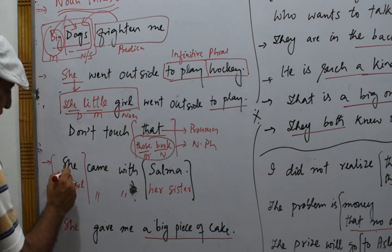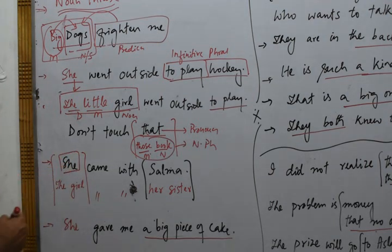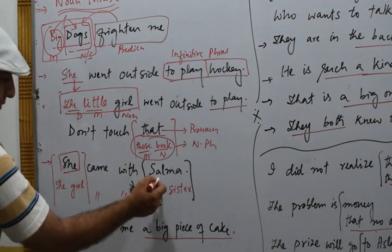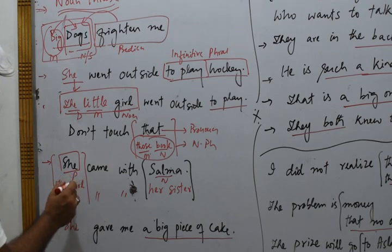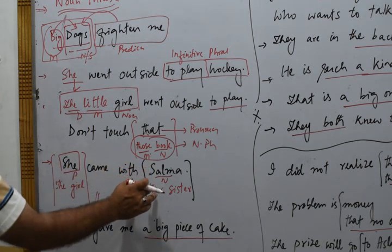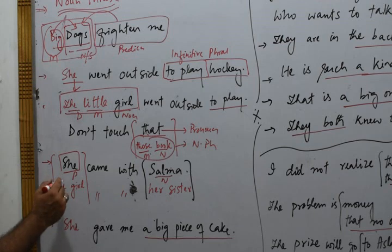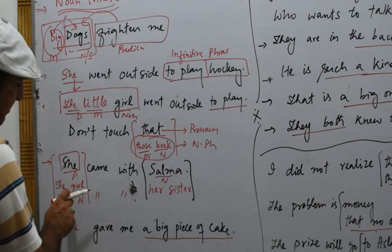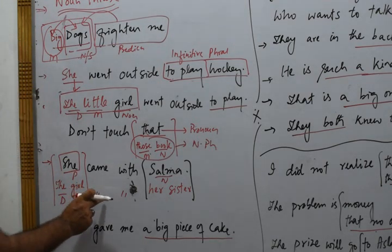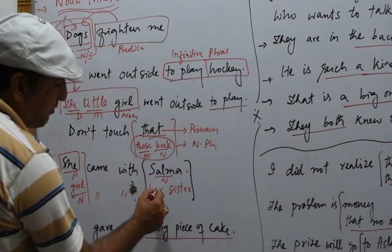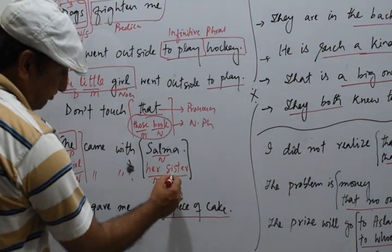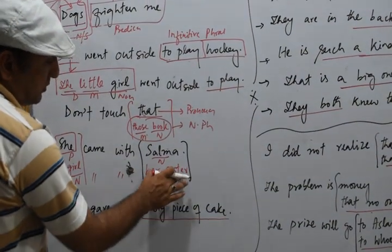Next: 'She came with her.' 'She' and 'her' are pronouns. We replace 'she' with 'the girl' — 'the' is determiner and 'girl' is noun — so 'the girl' is a noun phrase. In place of the name Salma we put 'her sister' — 'her' is modifier and 'sister' is a noun — so 'her sister' is also a noun phrase.